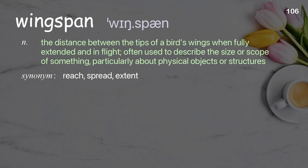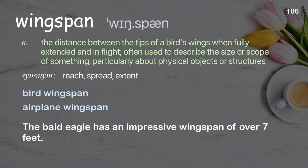Wingspan: the distance between the tips of a bird's wings when fully extended and in flight; often used to describe the size or scope of something, particularly physical objects or structures. Examples: bird wingspan, airplane wingspan. The bald eagle has an impressive wingspan of over seven feet.